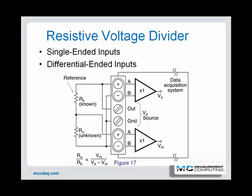Resistance voltage divider circuits can use either single-ended or differential input amplifiers. The known reference resistor should have a value that is close to the unknown value, and the source voltage should be low enough to ensure that the current is within acceptable limits.